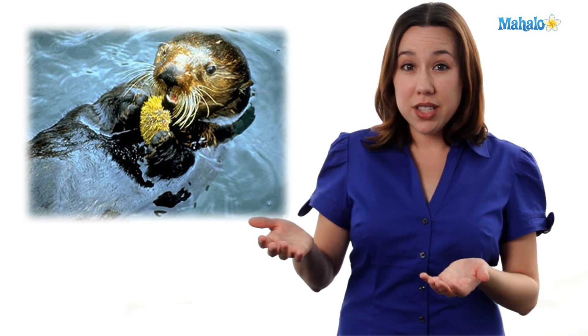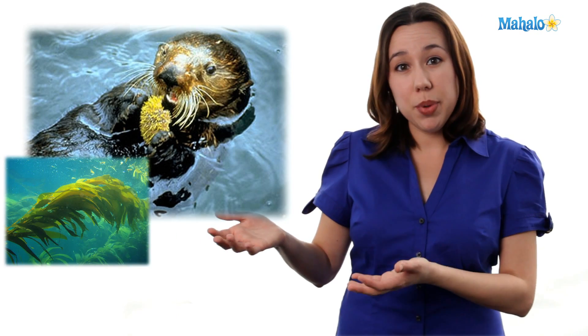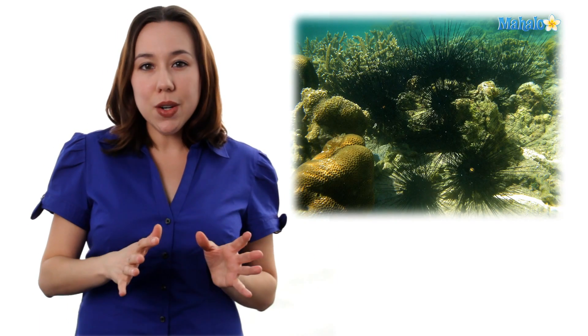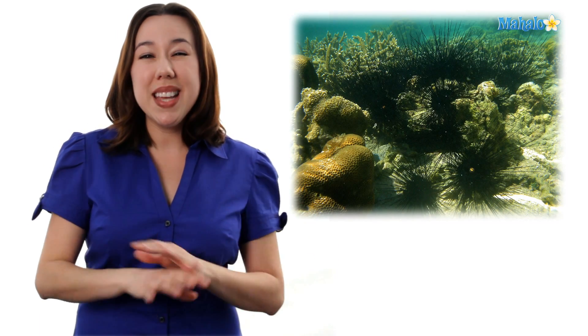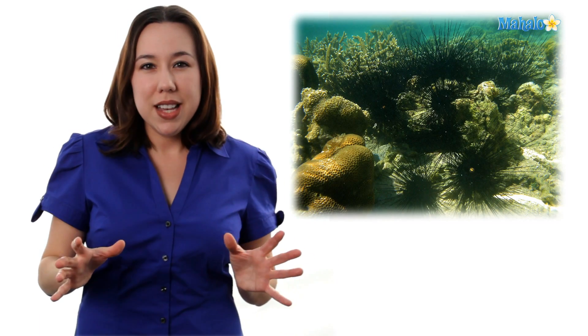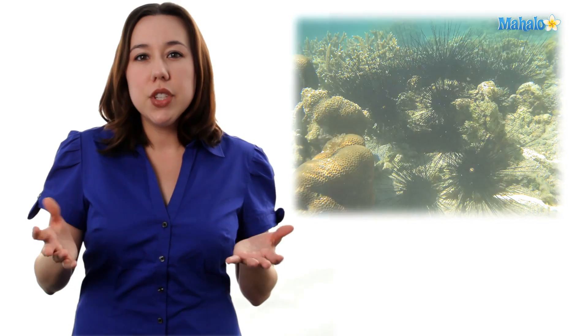Sea urchins eat kelp. With no sea otters, the sea urchin population exploded and started to eat all of the kelp. What's the big deal? Well, kelp actually provides a place for protection as well as spawning for fish. So as the sea otters disappeared, so did the fish.